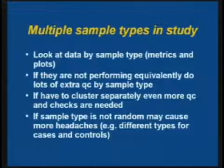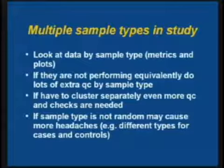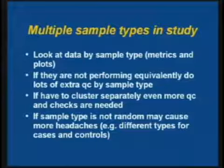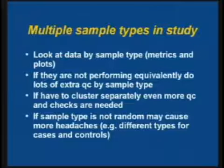If you have multiple sample types in your study — especially as we start combining studies — you need to look at the data by sample type, both your metrics and probably your plots. If they're not performing equivalently, you'll have to do lots of extra QC by sample type. If you have to cluster separately, you'll need even more checks to make sure you didn't do a really bad job for one set and mush the data together. If the sample type isn't random — for example, if you've got different sample types for your cases and controls — you've got lots of potential issues downstream.